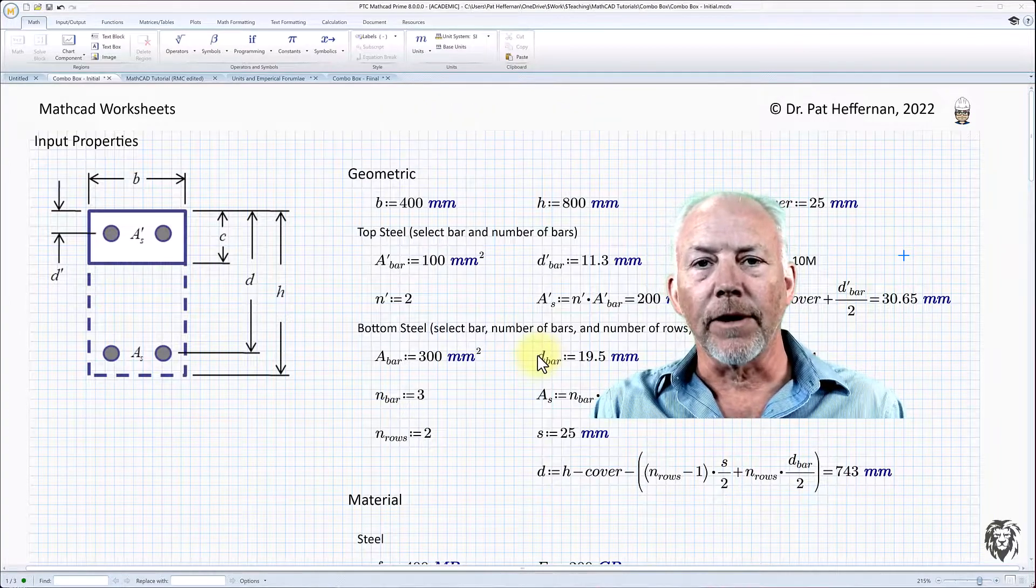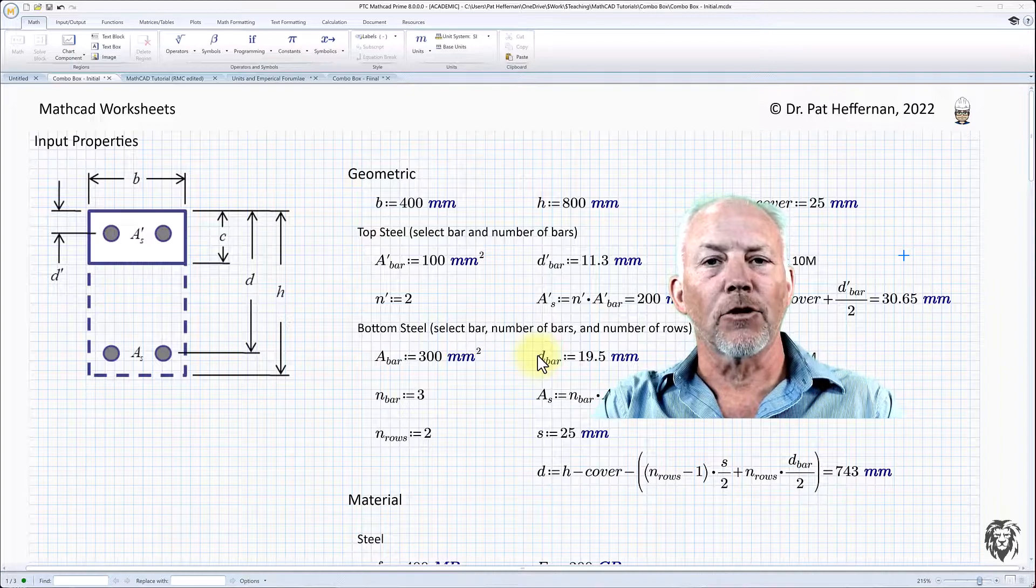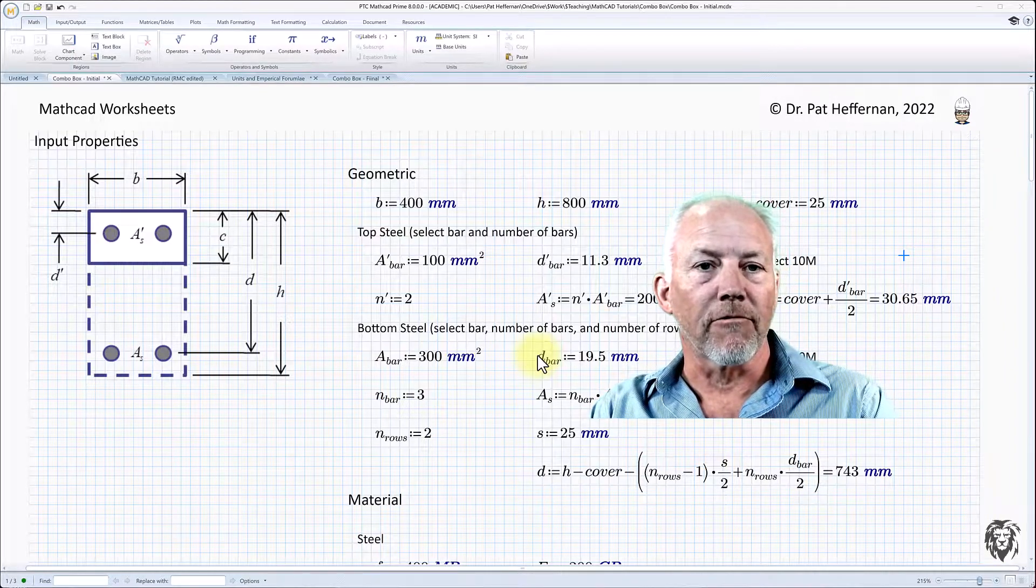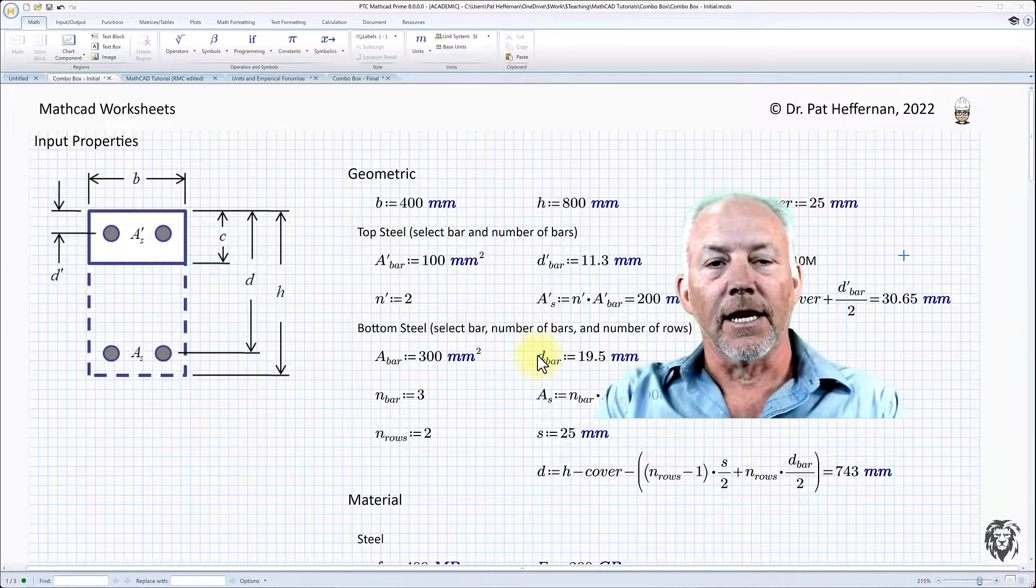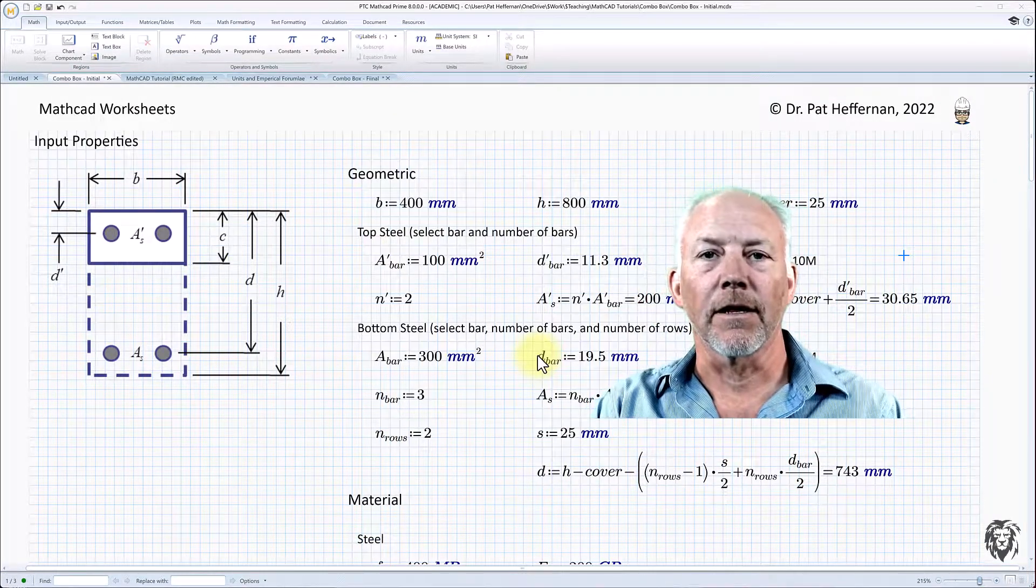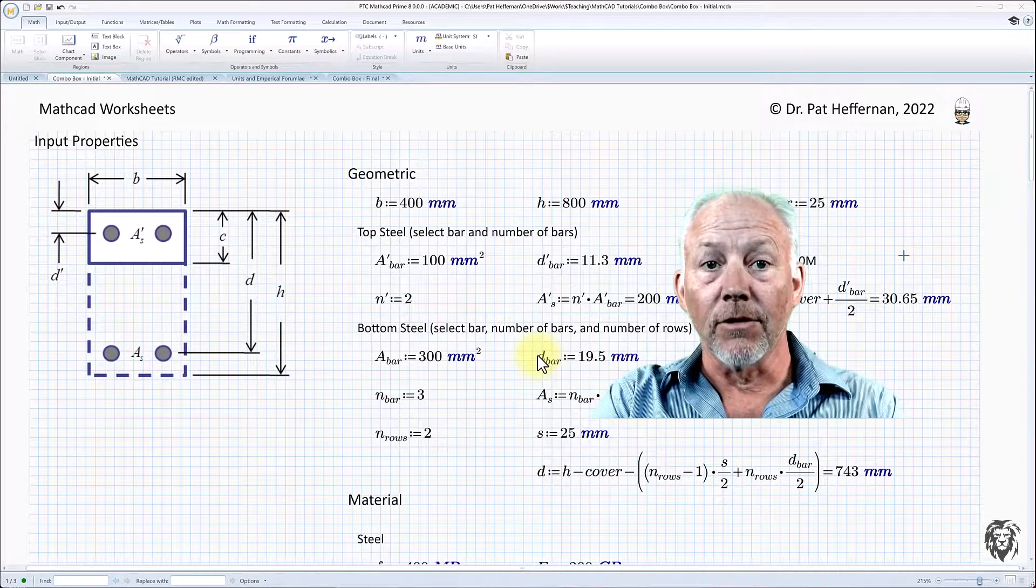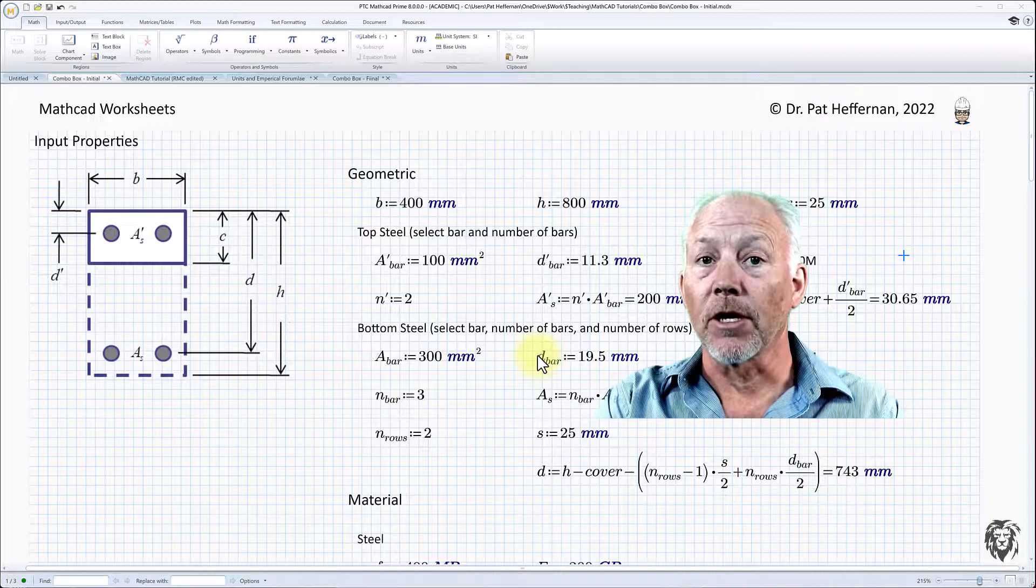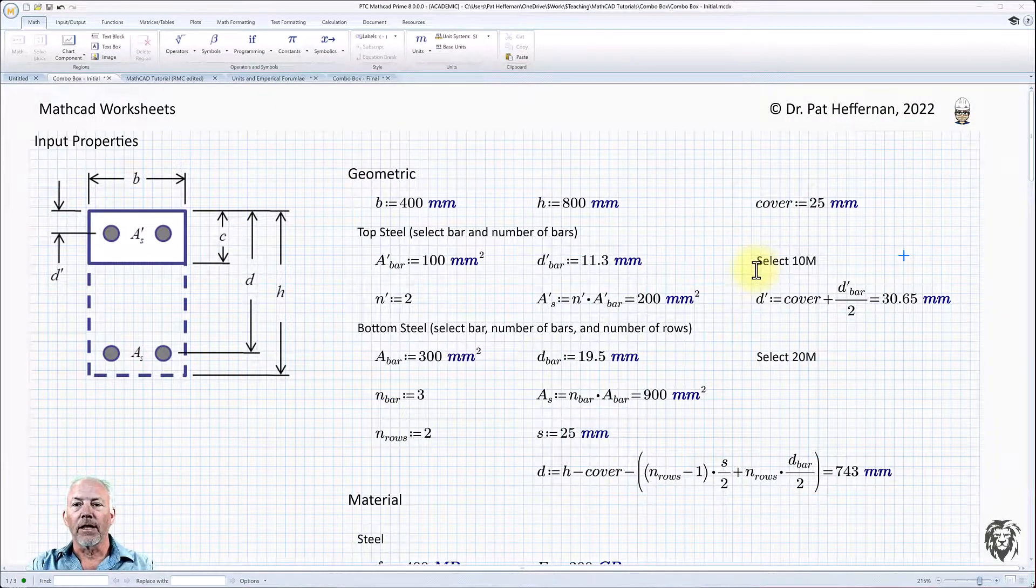And we define the various bar parameters for the top steel and the bottom steel. And if you know anything about concrete design, you know that we have a bunch of standard bar sizes that we use, which we refer to by their nominal diameter. And so wouldn't it be great if instead of looking up that table and explicitly defining their parameters, we could just have that table included in Mathcad. And that's what we're going to do with the combo box this morning.